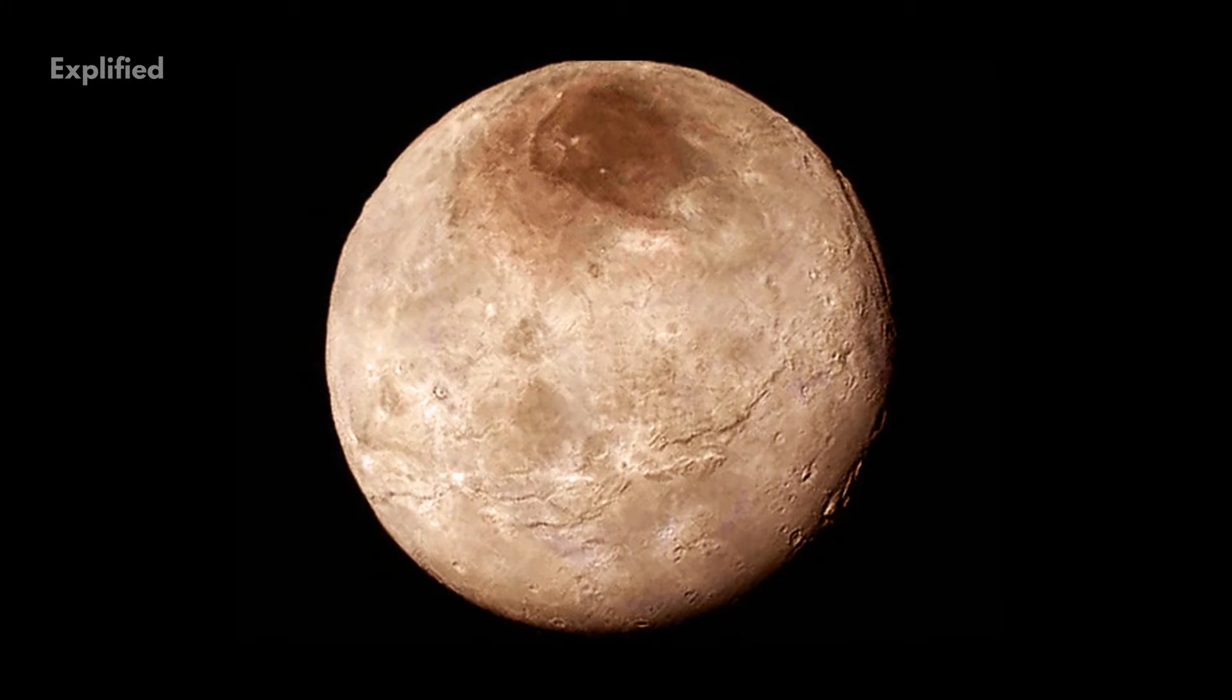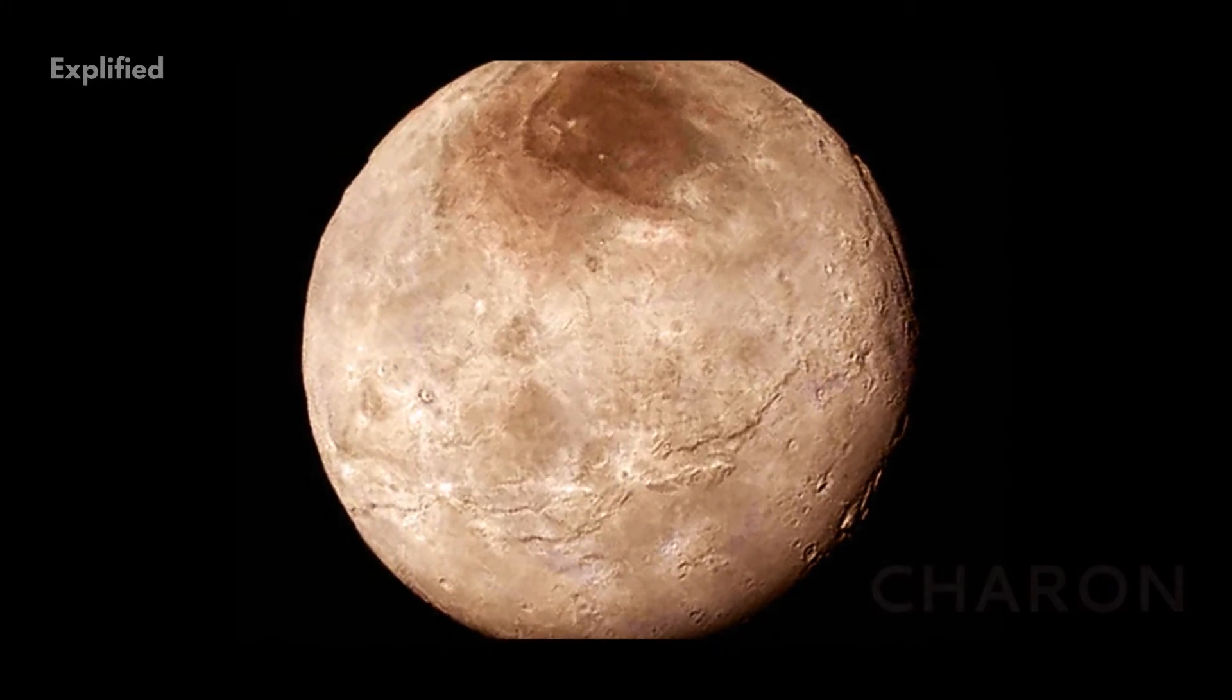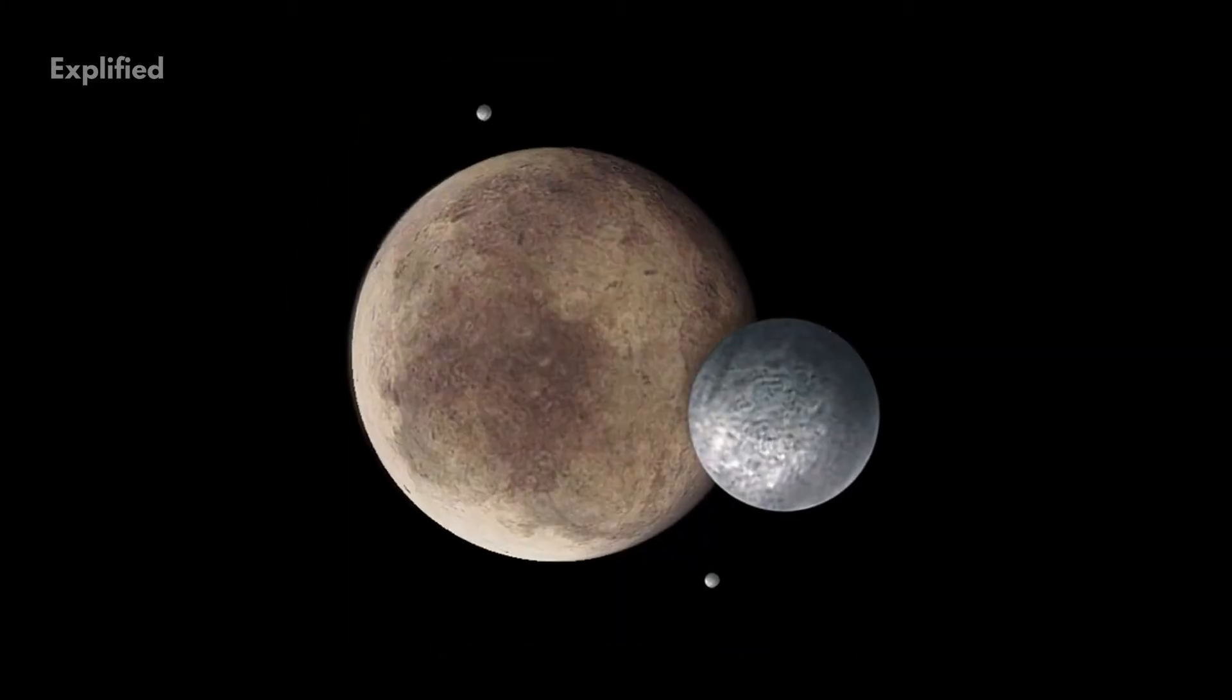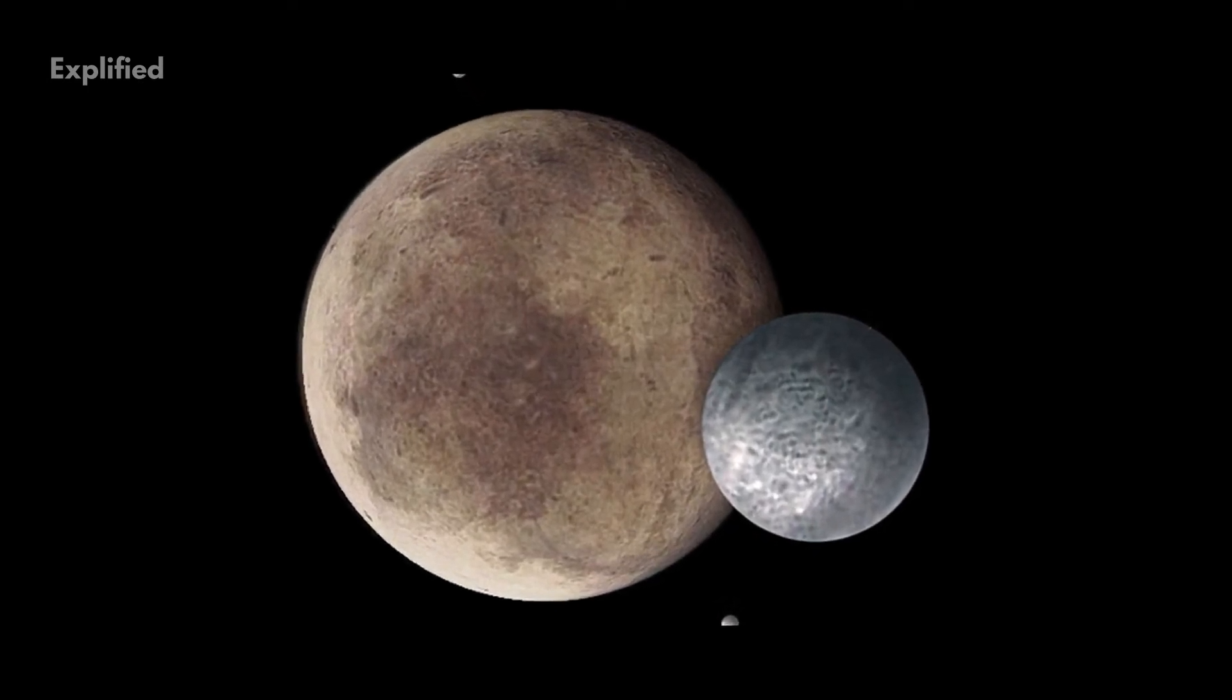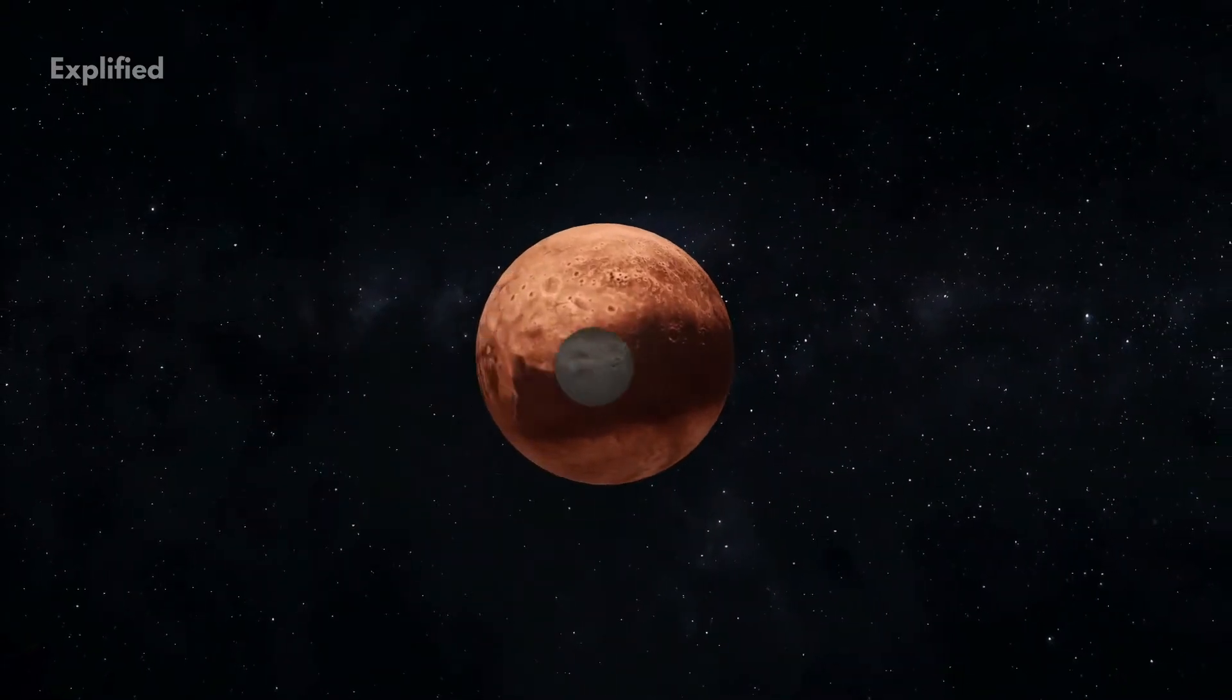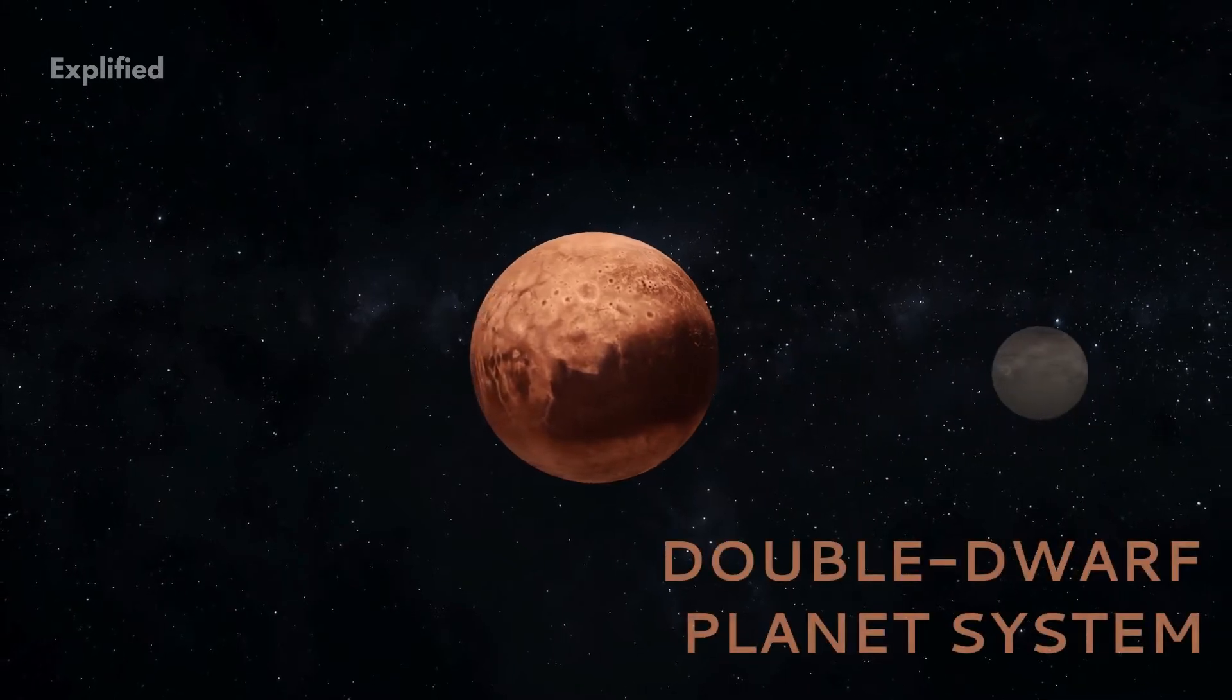Why does it have a moon, Charon, which is nearly the same size as Pluto, and also has four smaller moons, making five moons total? Pluto and Charon orbit around each other, a true double dwarf planet system.